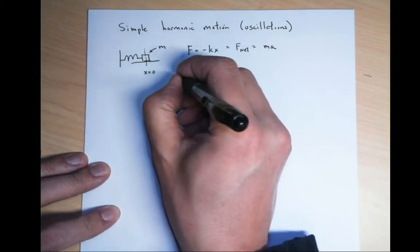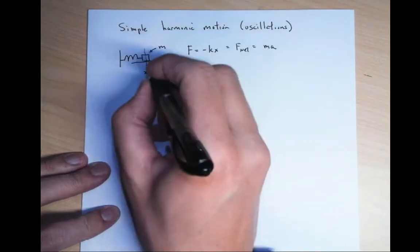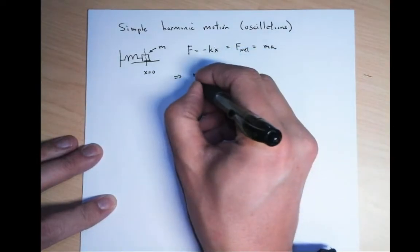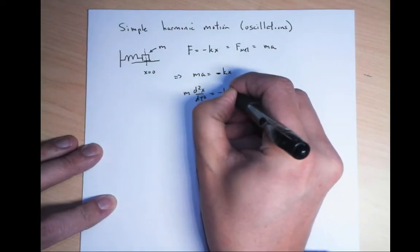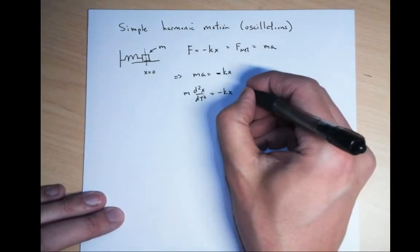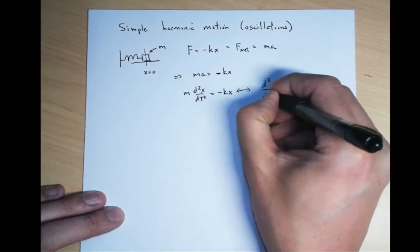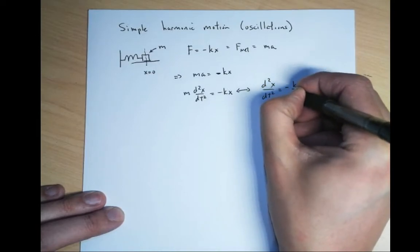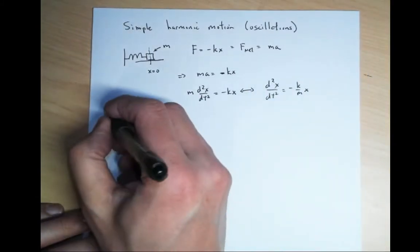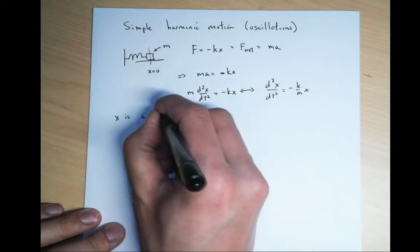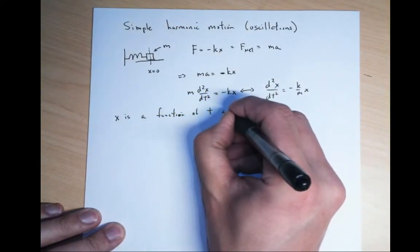So what we have is ma equals minus kx, or another way of writing this is m times d squared x dt squared equals minus kx. Bringing m to one side, d squared x dt squared equals minus k over m times x. Now we want to solve for x, which is a function of t.